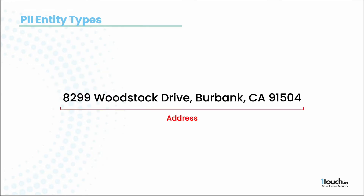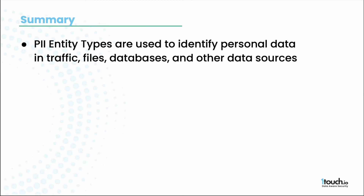Another example that might help you understand this concept even better is an address. You can take just a quick look and automatically recognize that 8299 Woodstock Drive is a street name and CA91504 is a zip code. Address, street and zip code are different PII Entity Types.